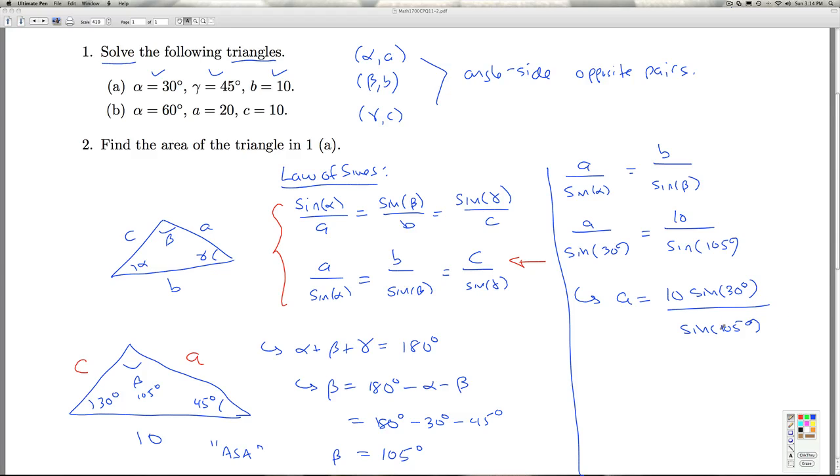Similarly, to go after C then, C over sine of gamma is B over sine of beta. So C over the sine of 45 degrees is 10 over the sine of 105 degrees.